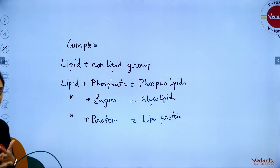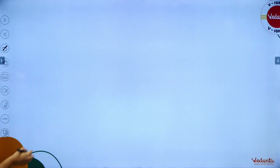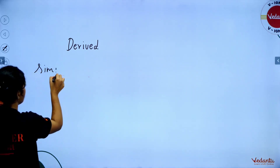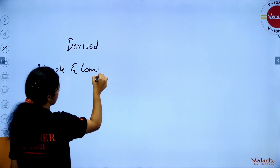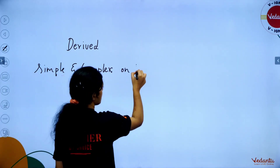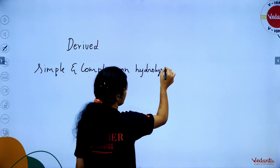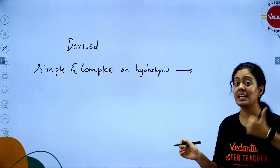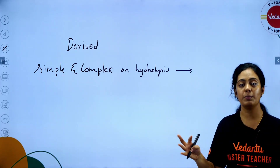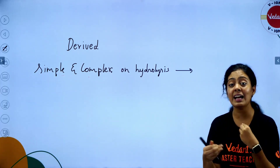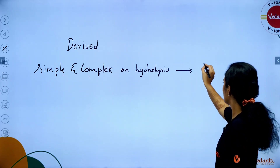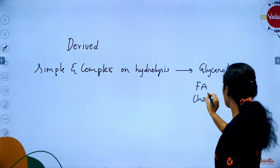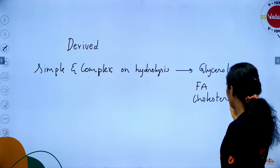The last type is derived lipids. When simple and complex lipids undergo hydrolysis, they give rise to derivatives — derived lipids. These derivatives include glycerol, fatty acids, and cholesterol. These are all examples of derived lipids.